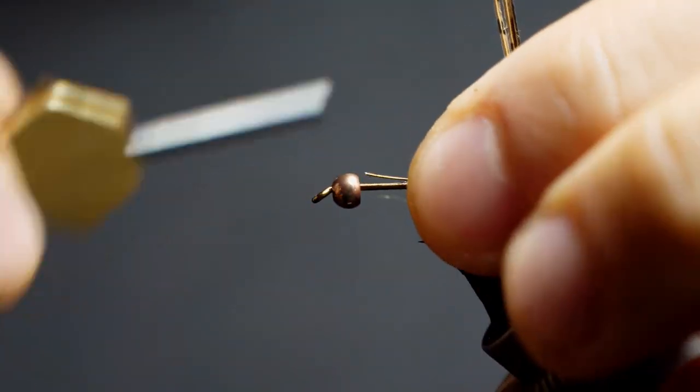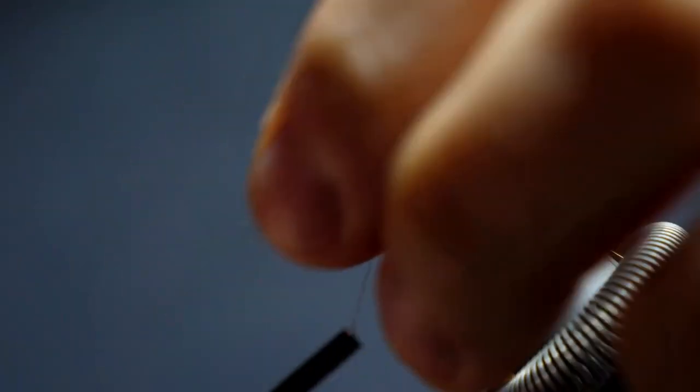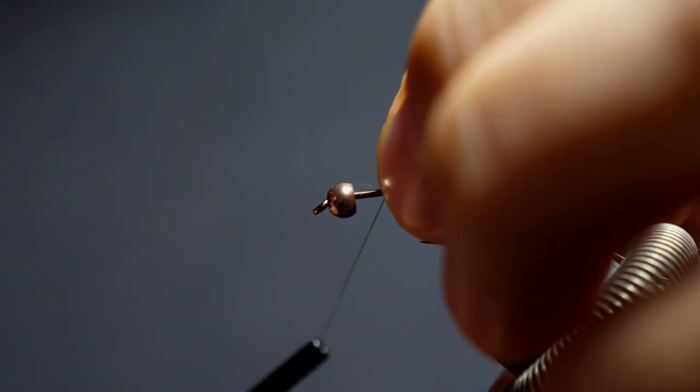Now I like to tie in my wire as a rib, but I like to keep it a little bit longer. You can see it's touching the bead here. The reason for that is I'm going to fold it back on itself. That's going to lock it in place, but it's also about building a taper for this hook.